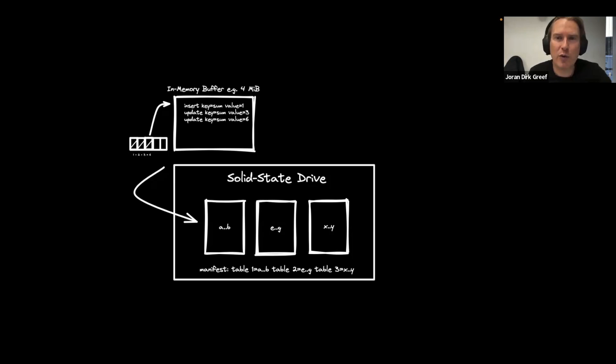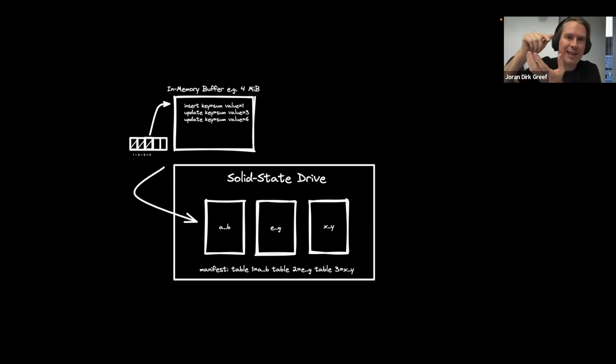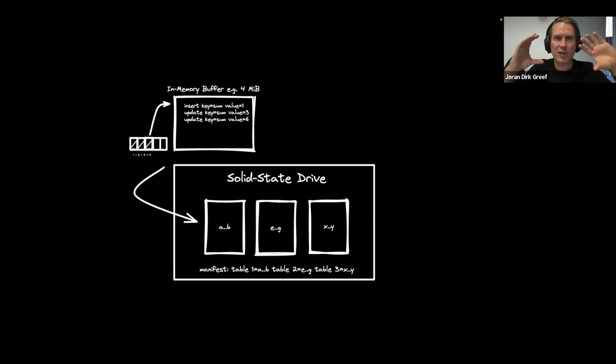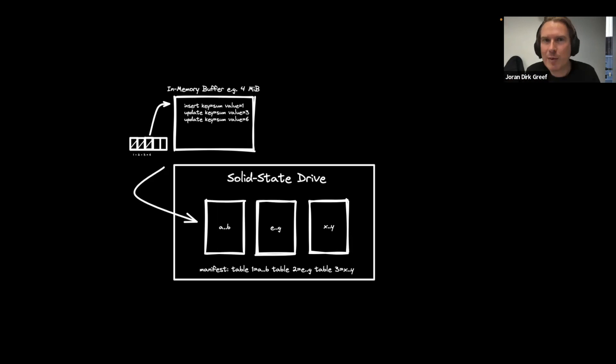With the write path solved, how do we solve the read path — how do we read state that's too big to fit in memory while it's been incrementally snapshotted? We check if the in-memory buffer has the key. Otherwise, we go to our manifest — a directory listing of tables on disk — and see what's in the newest table. Tables are just sorted values. If we don't find it in the newest table, we go back in time until we find a table that does. When we accumulate many tables, we start compacting — merging tables together to create new ones — limiting the number of overlapping tables and fragmentation.